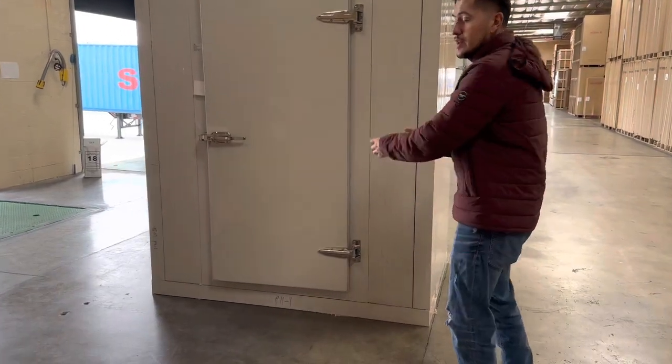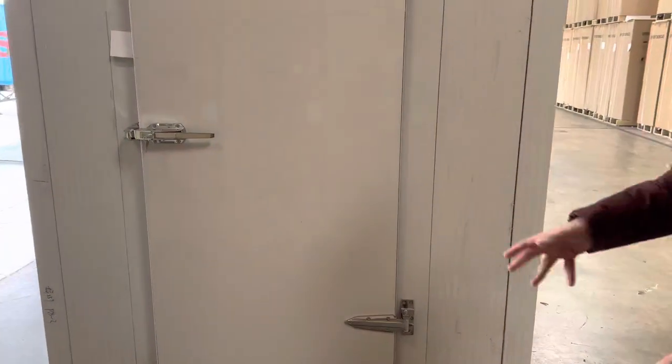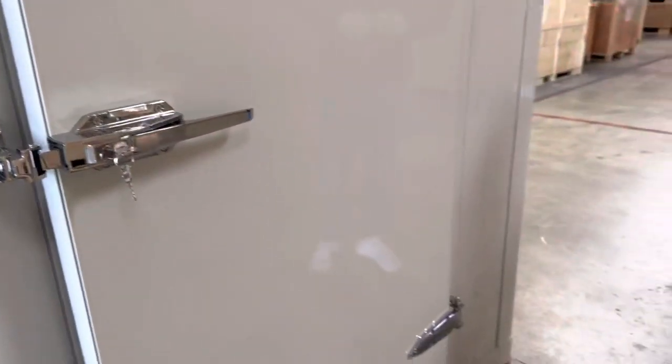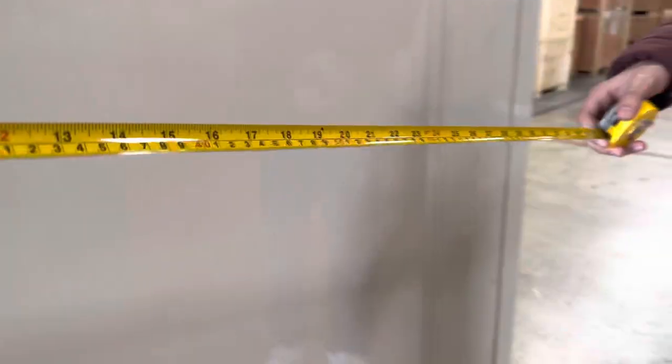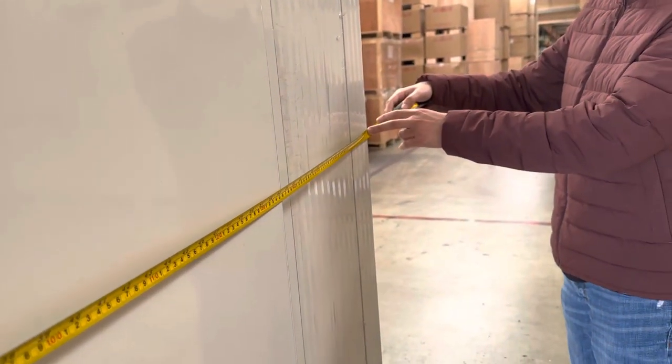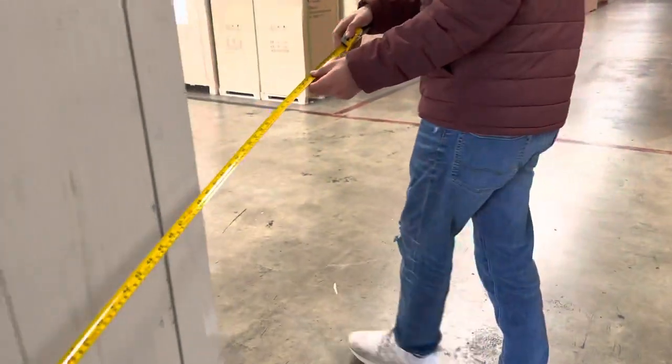The box is already installed here, but when you purchase it, it will not be installed - you have to install it yourself. Now I want to measure the unit so you can see the exact measurements. As mentioned, it's 4 by 6, so you're looking at 6 feet, 72 inches.